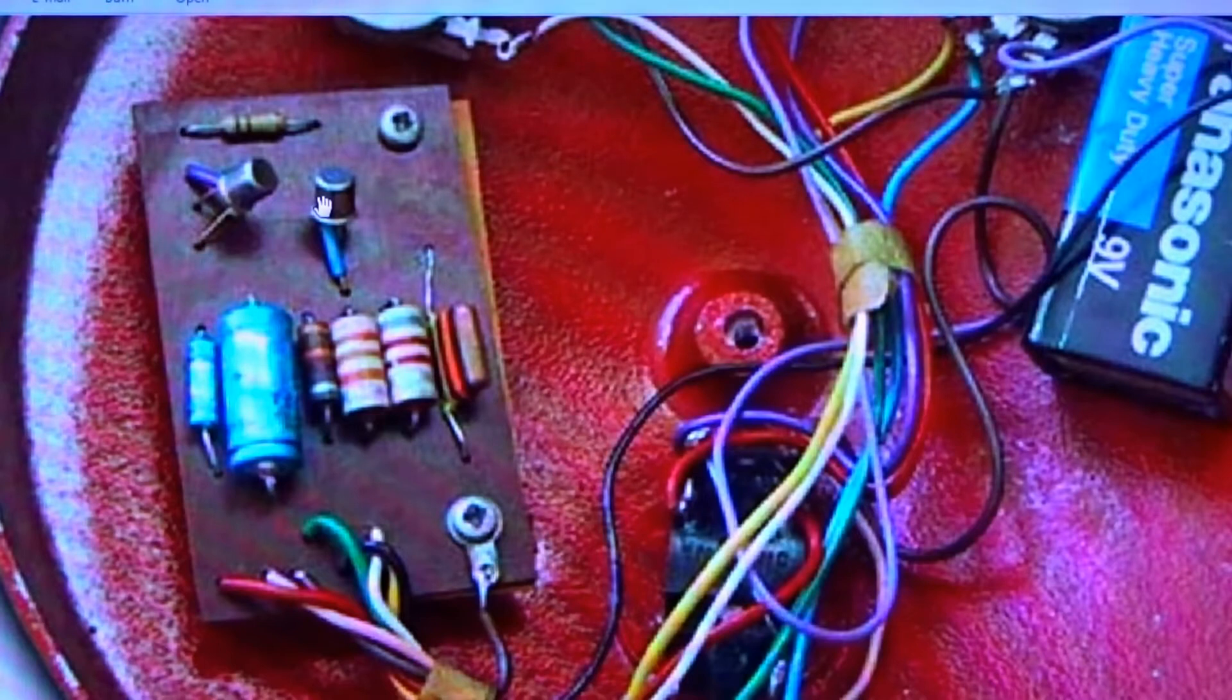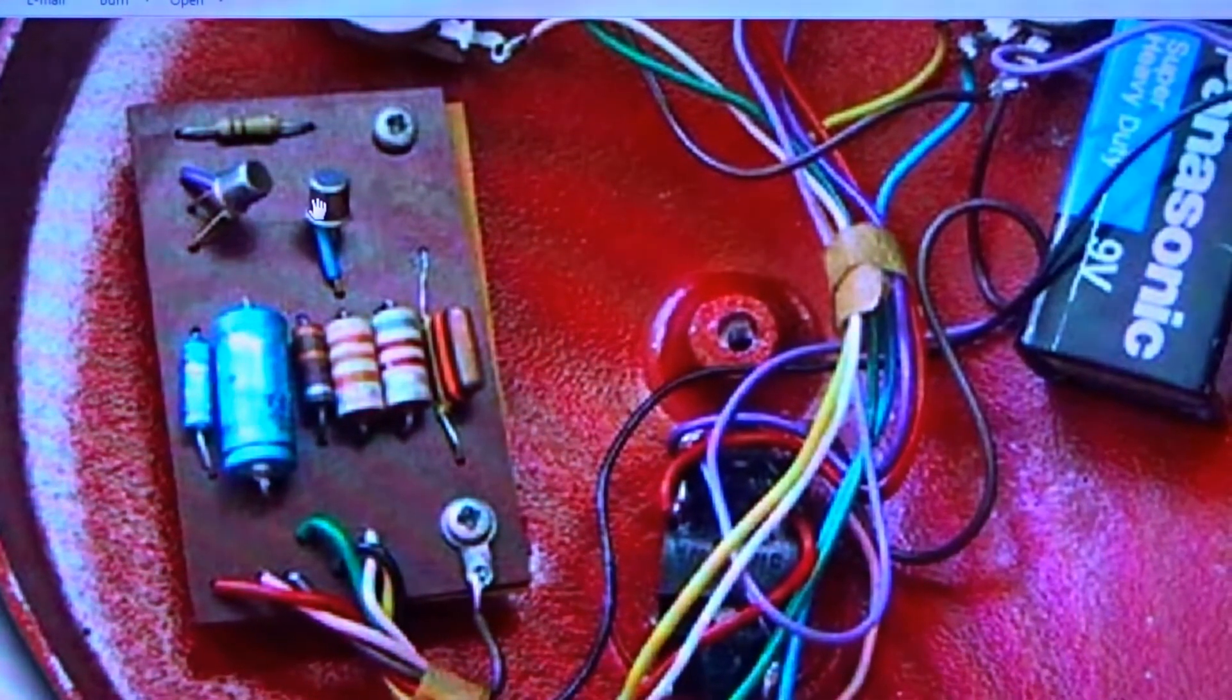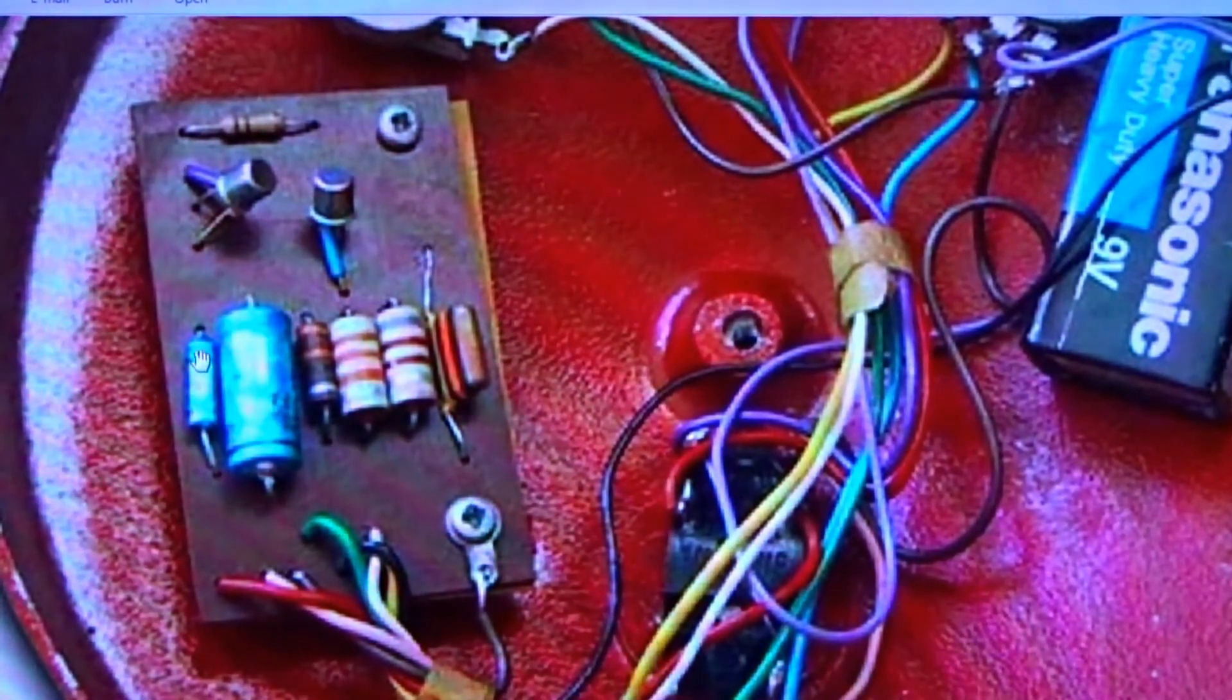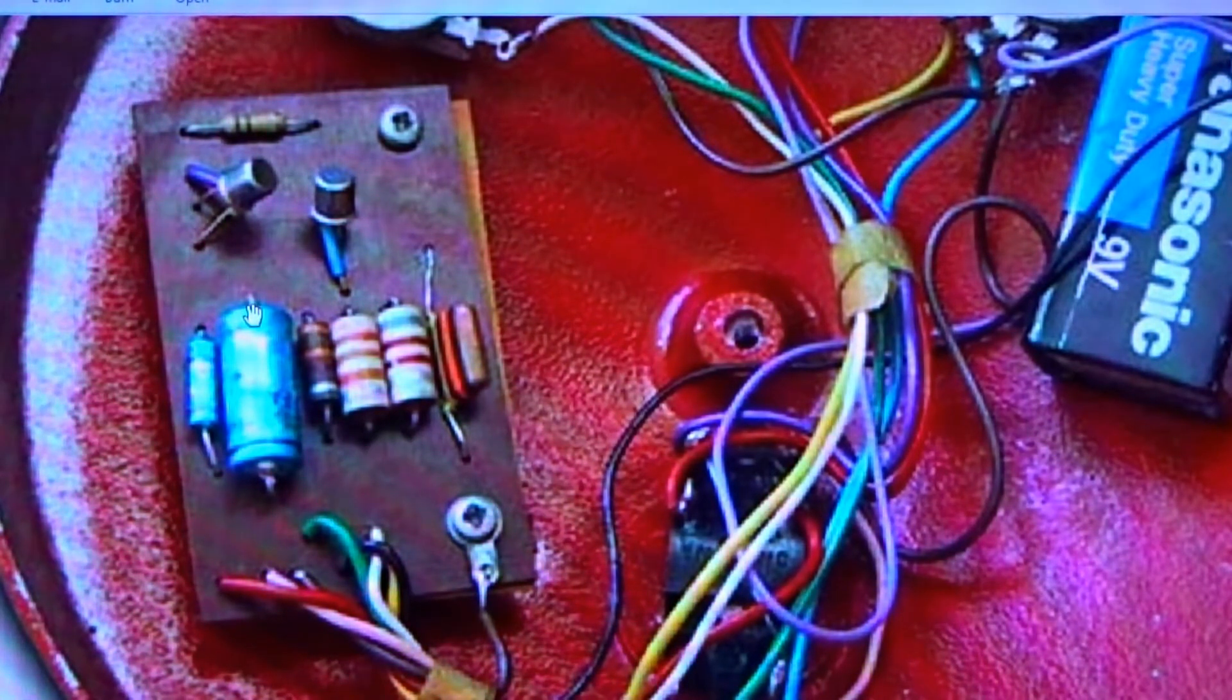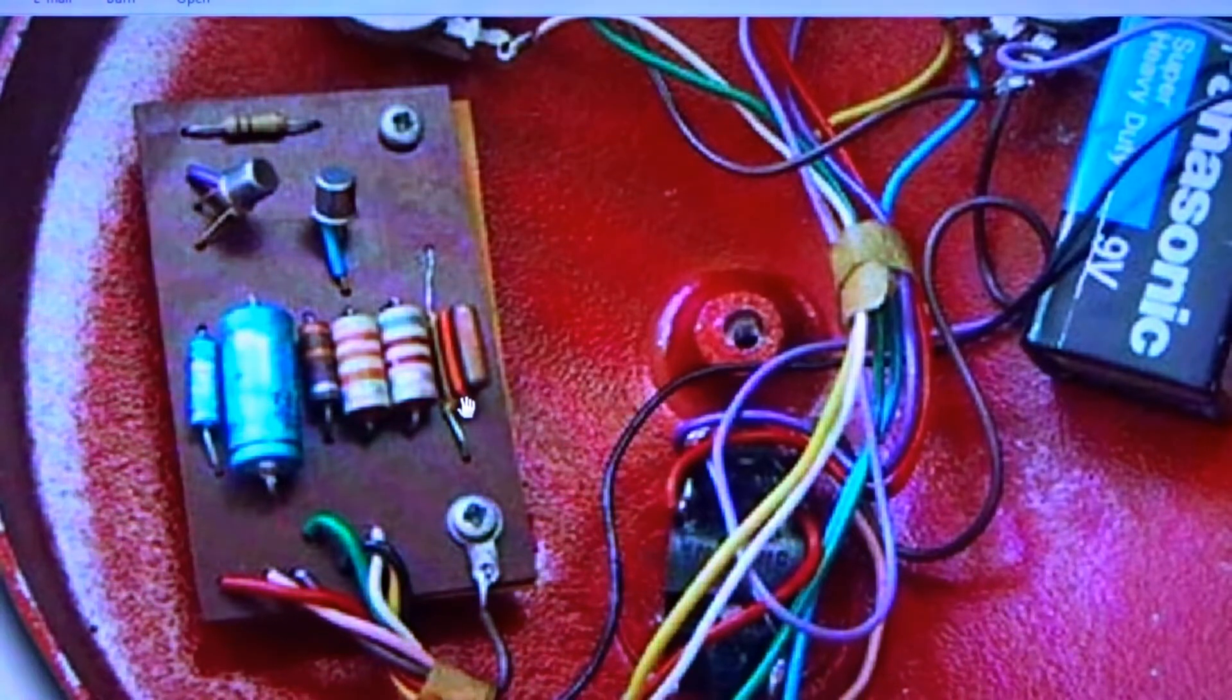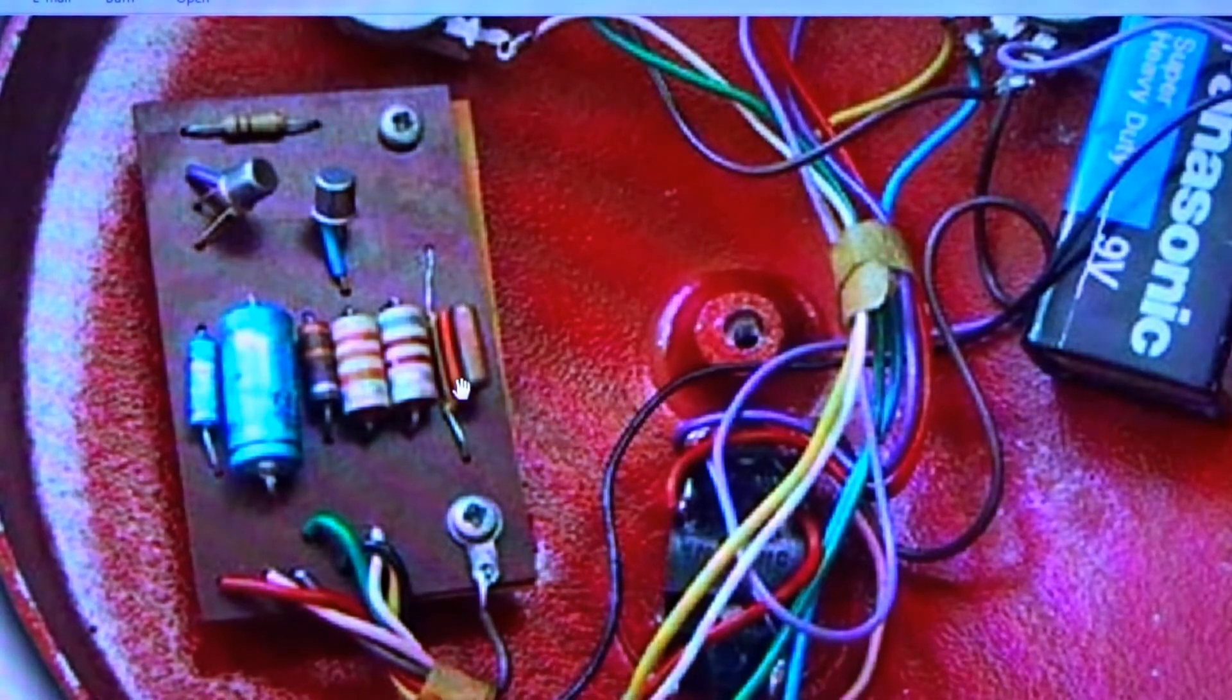Over here on the left you have a capacitor - it's polarized meaning it has polarity, a positive and negative. This big one, same thing, positive and negative capacitor. Then you got a smaller resistor and some bigger resistors, and then you have another capacitor. This one is a different type, it happens to be a ceramic.